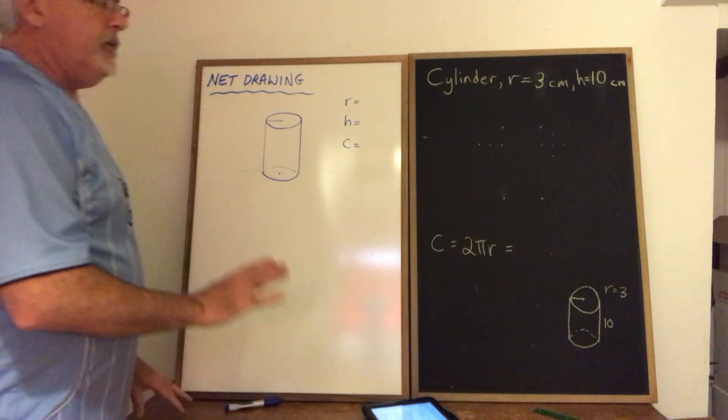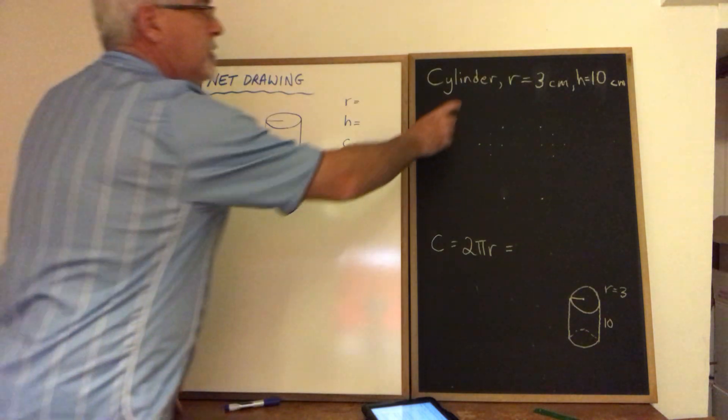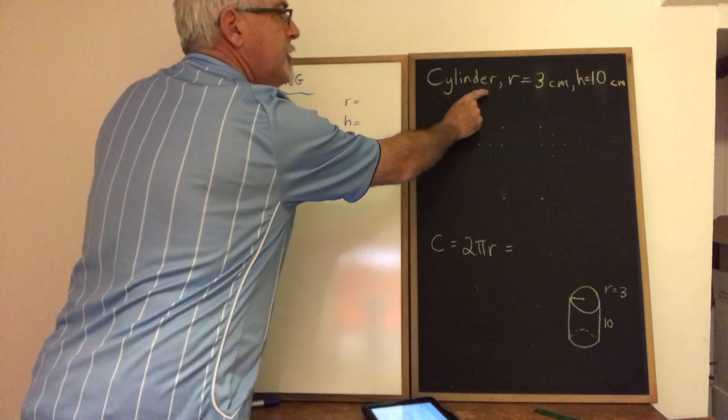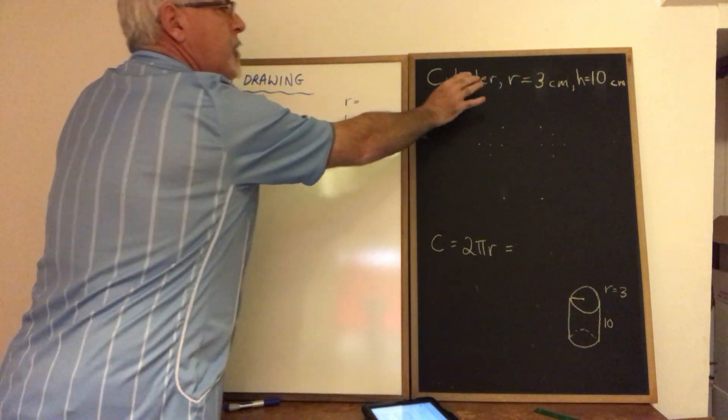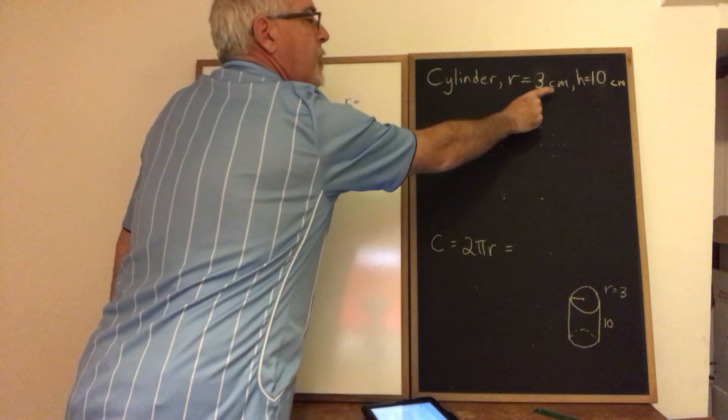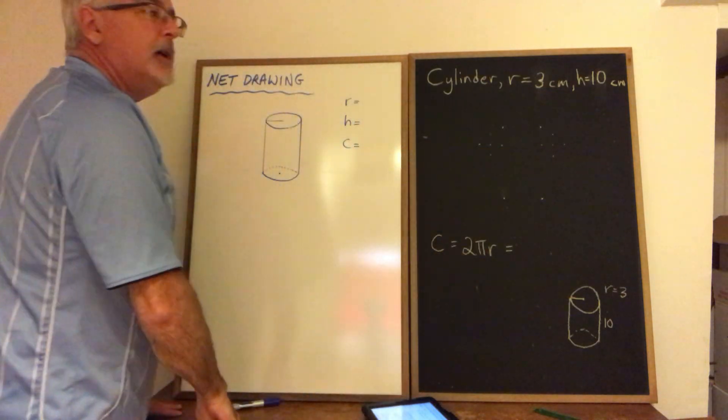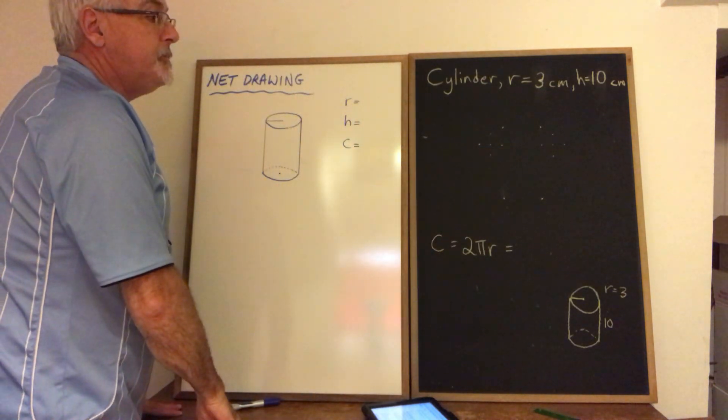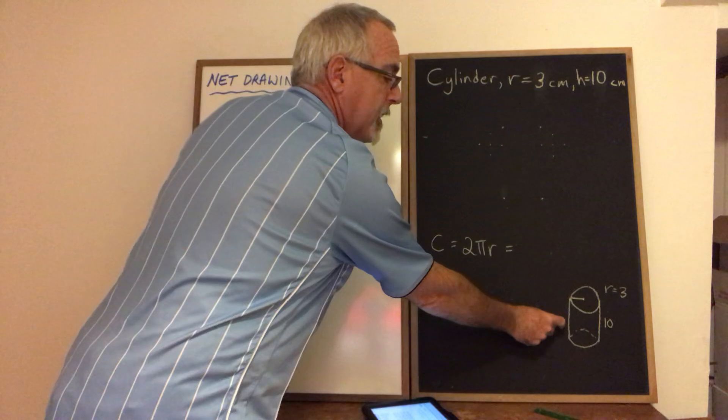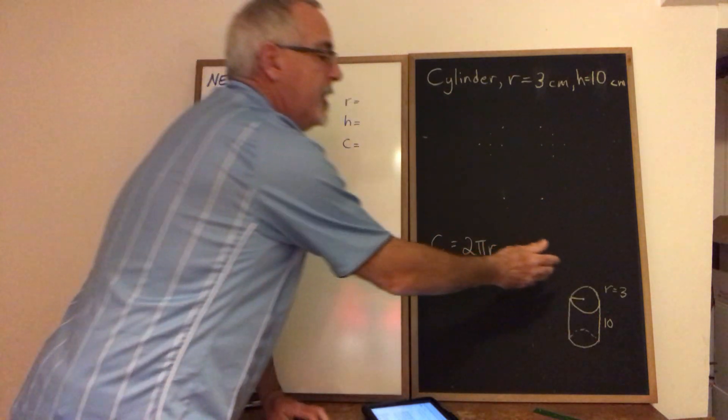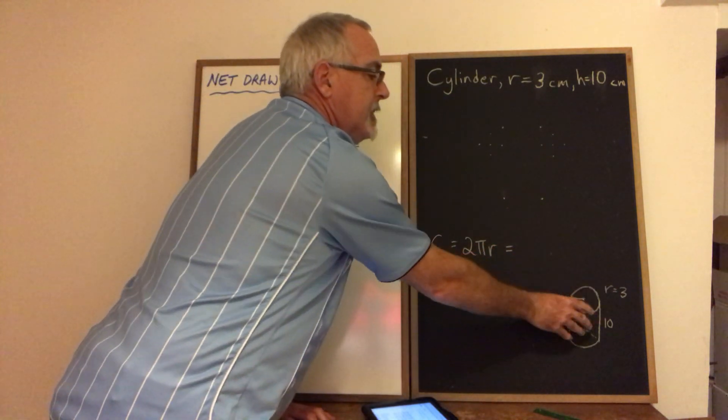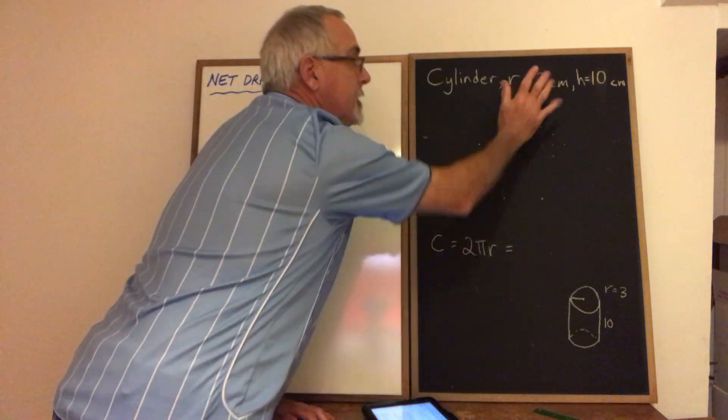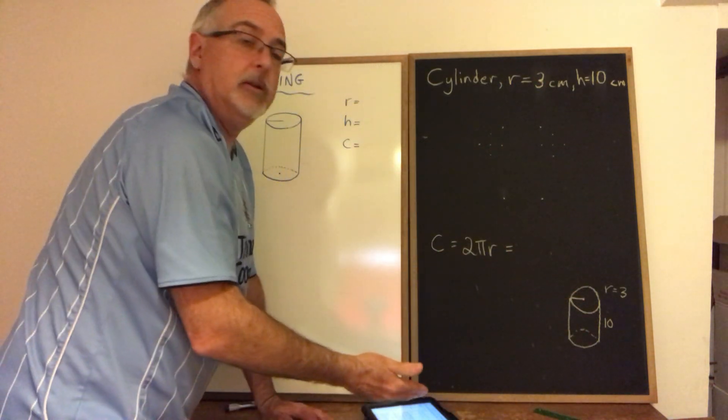Let's do one of our examples and see how it plays out. In this question on the chalkboard, we are given a cylinder and we're told the radius and the height are three centimeters and ten centimeters. We also have a drawing and this drawing is done with those dimensions, meaning the radius on this drawing is actually three centimeters, the height actually is ten centimeters.